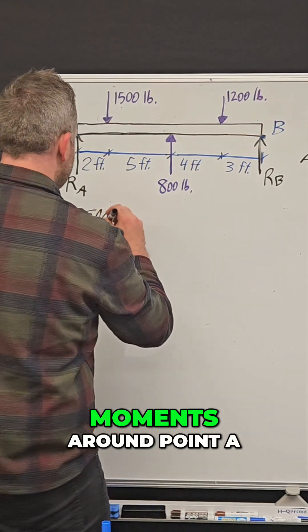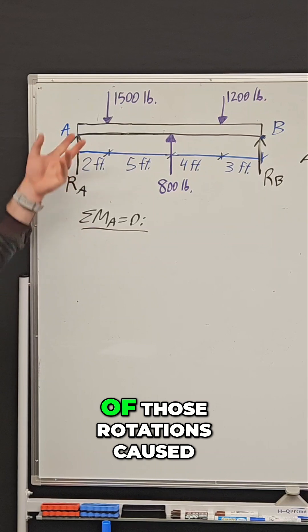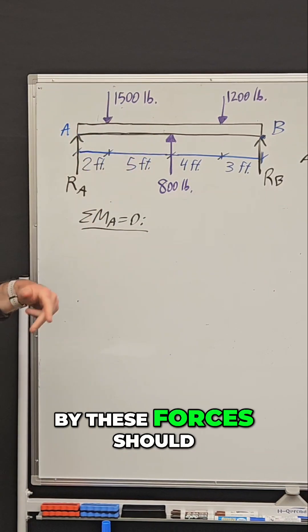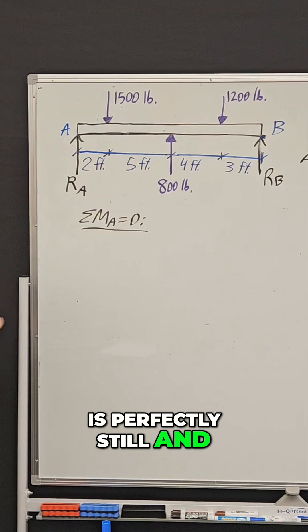We're going to do the sum of all moments around point A equals zero. This equation is simply saying that all of those rotations caused by these forces should add up to zero so that your beam is perfectly still and not rotating.